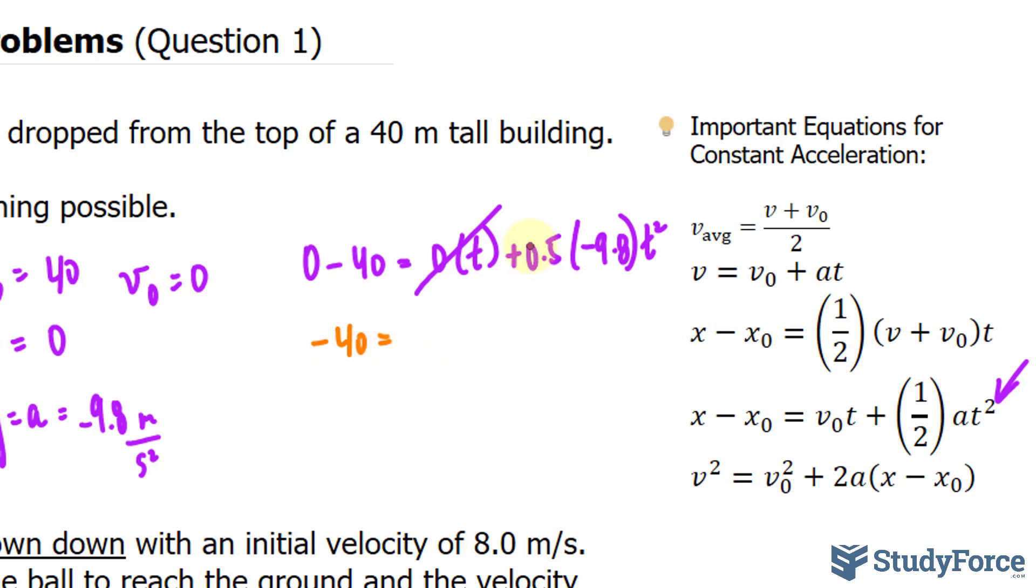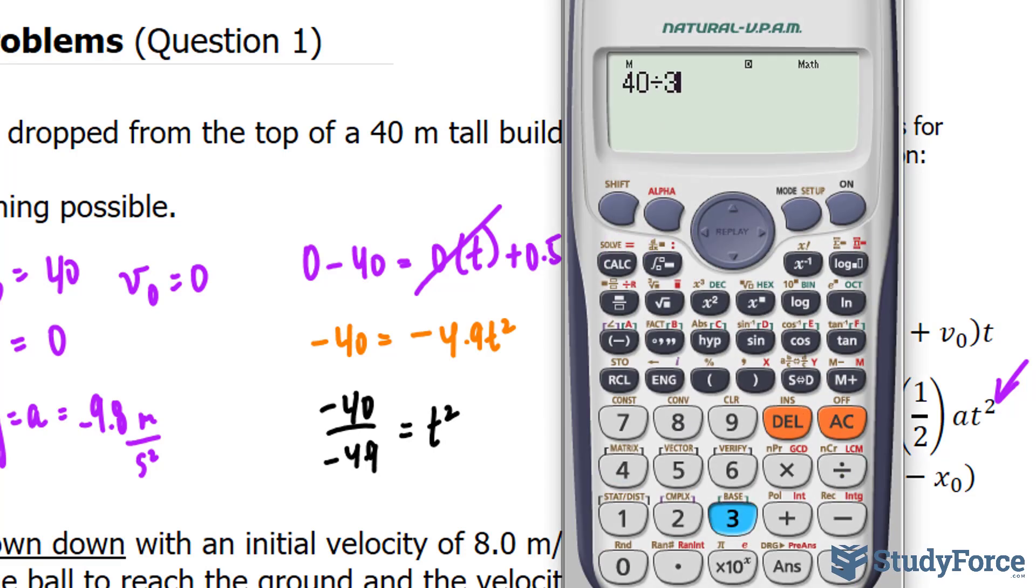That is negative 4.9 t to the power of 2, divide both sides by negative 4.9 so negative 40 over negative 4.9 gives me t to the power of 2, notice that these are both negative so that will give us a positive output. So 40 divided by 4.9 gives me the following value if I square root that to isolate for t.